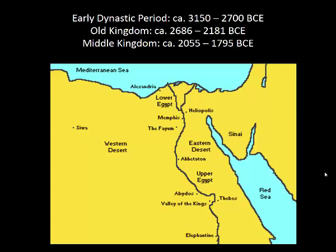This lecture is an introduction to Egyptian art that was produced during four of the five historical periods that we see art production. This lecture is going to cover art from the pre-dynastic period, which sets the scene for some of the art we're going to look at in later parts of the lecture.